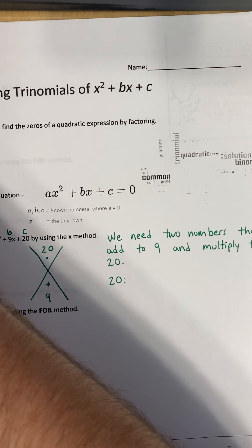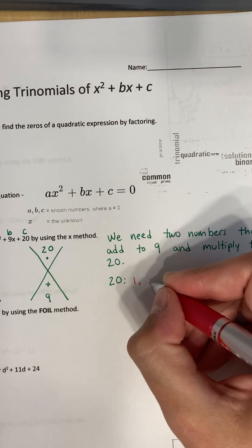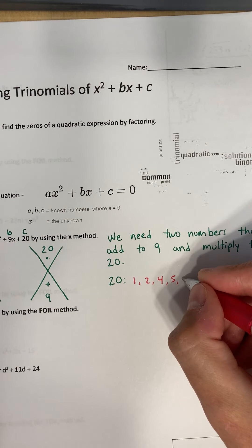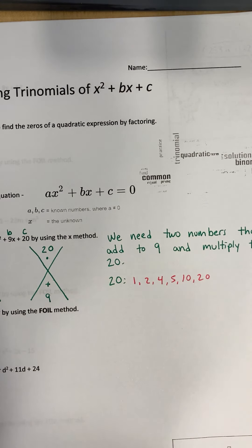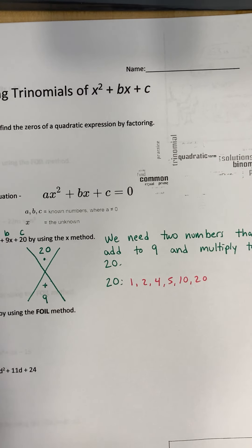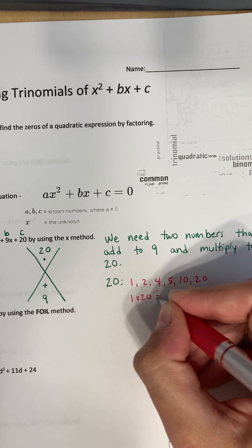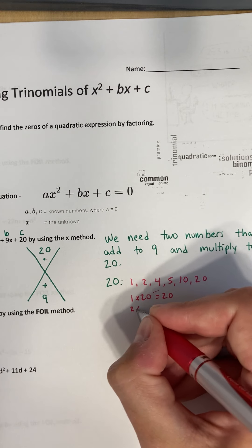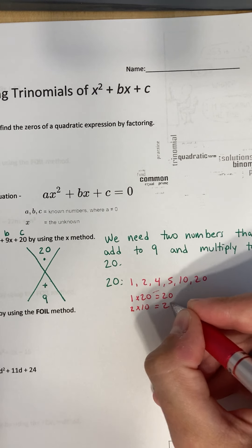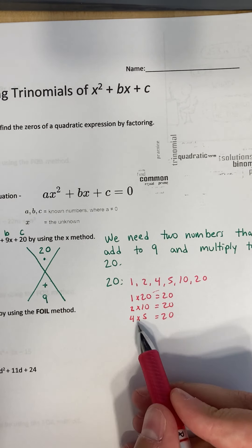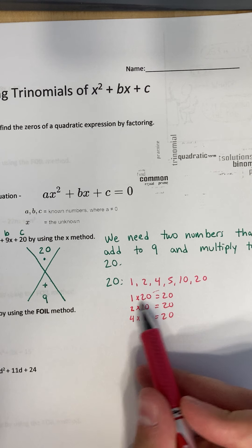Well, we've got 1, 2, 4, 5, 10, and 20. And if you wanted to write them in such a way where you wrote them as pairs so that they multiply to get 20, you could do that too. So 20, this would be 1 times 20 gives you 20, right? 2 times 10 gives you 20. And 4 times 5 gives you 20.